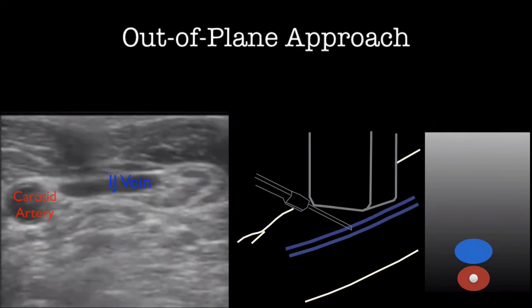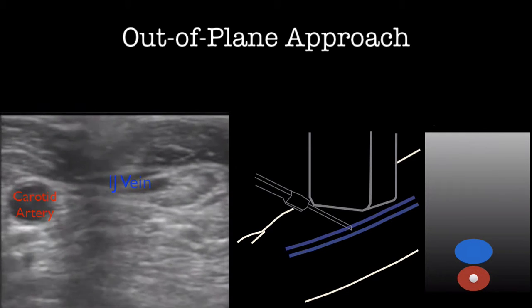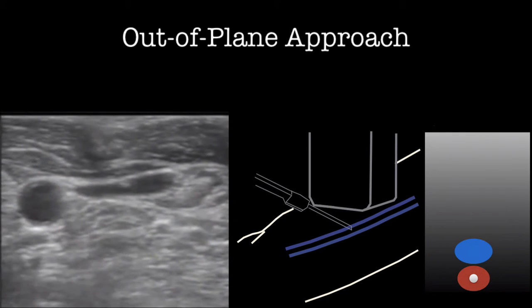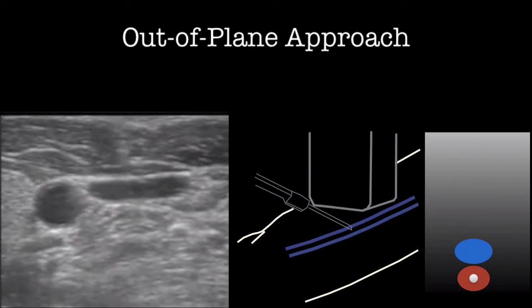Here we see the IJ vein next to the carotid artery. The needle has been inserted all the way to the hub and you cannot see the needle tip as it is deep to the vein.